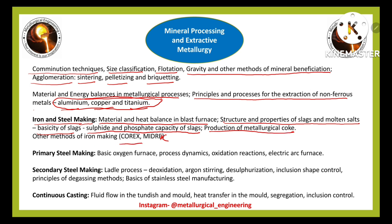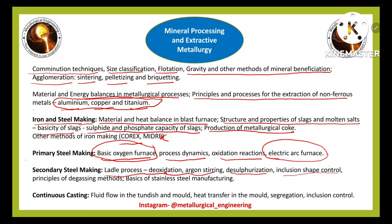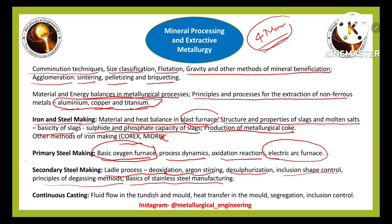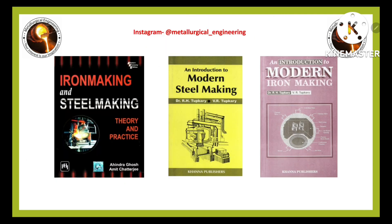Iron and steel making covers material and heat balance in blast furnace, structure and properties of slags and molten salts, basicity of slags, sulfide and phosphate capacity of slags, production of metallurgical coke, alternate ironmaking methods like COREX and MIDREX, primary steelmaking via basic oxygen furnace and electric arc furnace, secondary steelmaking processes like ladle processes, deoxidation, argon stirring, desulfurization, inclusion shape control, and principles of degassing. Stainless steel manufacturing basics are also included. This part will definitely have more than four numerical problems, so focus on mass and heat balance.